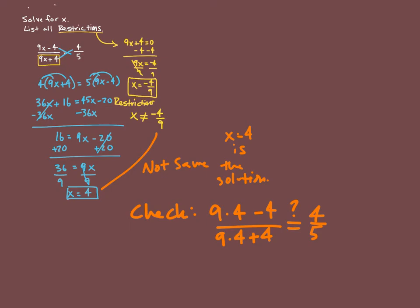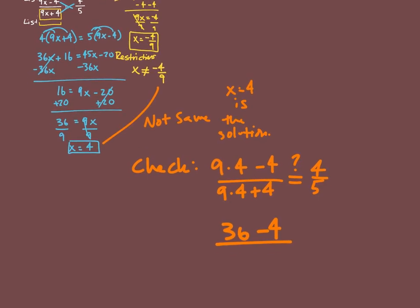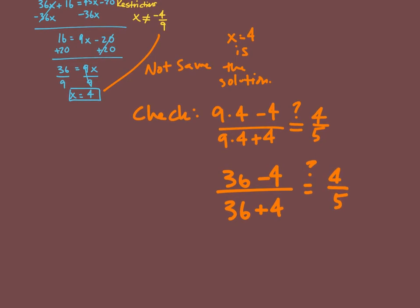From there, nine times four is 36 minus four over 36 plus four. Is this equal to four over five? So 36 minus four is 32, and then 36 plus four is 40. Each of these numbers are divisible by eight, and it does in fact give us four fifths. 32 divided by eight is four, 40 divided by eight is five.